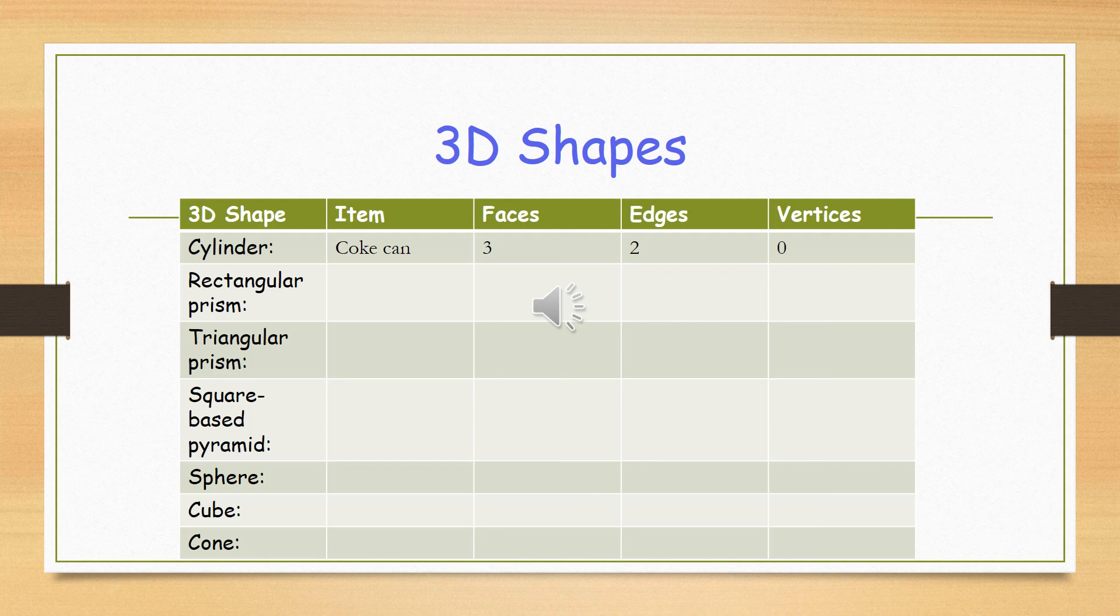Then you're going to look for a rectangular prism. What can you find that could be a rectangular prism? A triangular prism, a square based pyramid, a cube, and a cone.